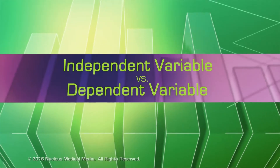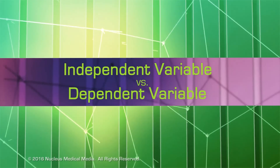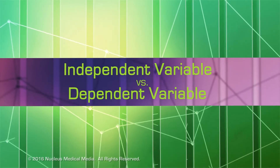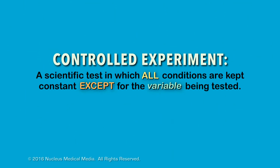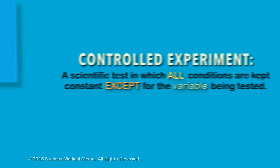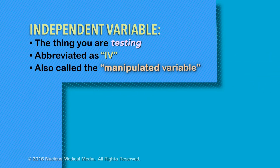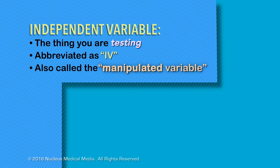Independent variable and dependent variable are important terms related to controlled experiments. Remember, a controlled experiment is a scientific test in which all conditions are kept constant except for the variable you're testing. The independent variable is the thing you're testing in an experiment. It's often abbreviated as IV and sometimes called the manipulated variable, because you change or manipulate this variable.